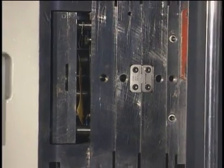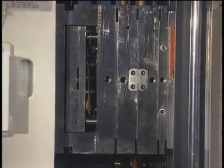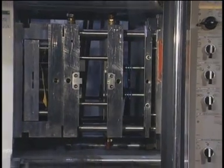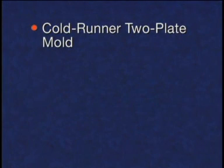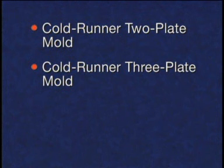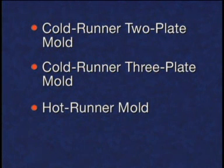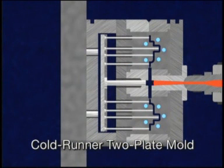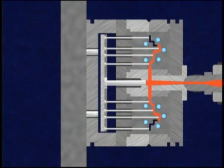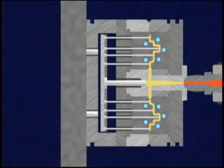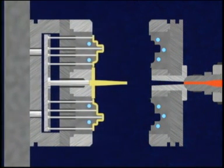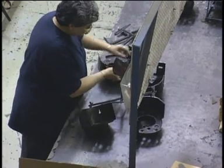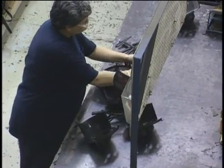Over time, many different mold designs have been developed to meet specific injection molding requirements. These mold designs include the cold runner two-plate mold, the cold runner three-plate mold, the hot runner mold, and the insulated runner mold. The cold runner two-plate mold consists of two plates with the mold cavity and core mounted on them. The cold runner system molds the sprue, runners, and gate along with the parts. After ejection, the parts are separated and the rest reground.